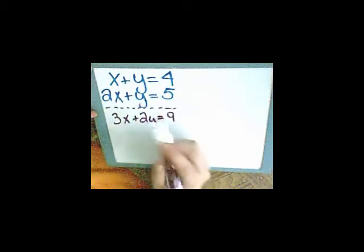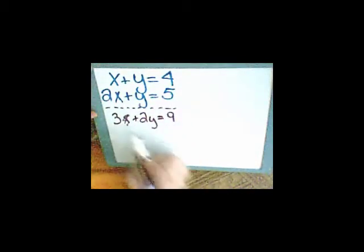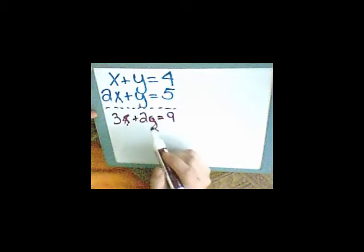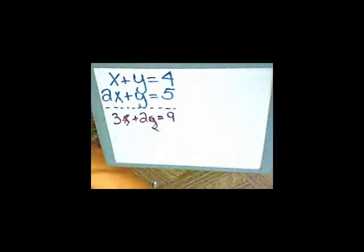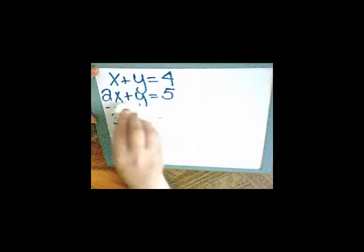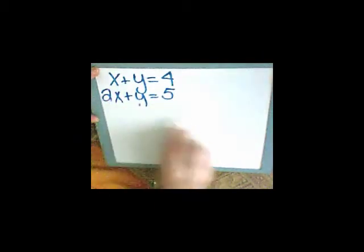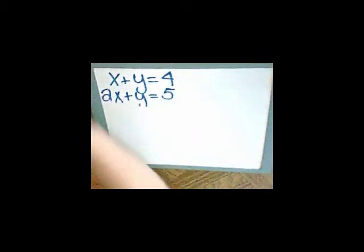The purpose of the addition method is when you add down we either get rid of an x or get rid of a y. But in this case we don't do either. So I'm going to have to manipulate one of the two equations so that when I add down I either get rid of my x or my y.